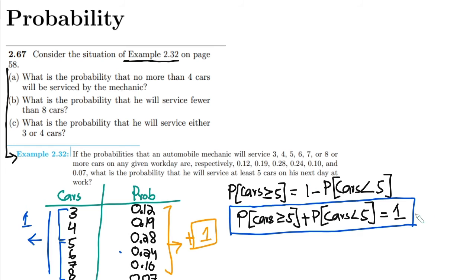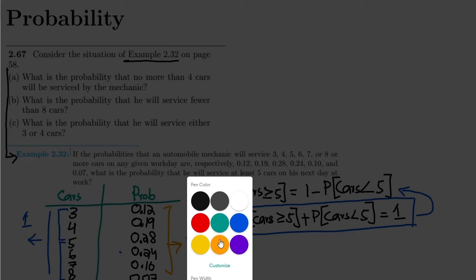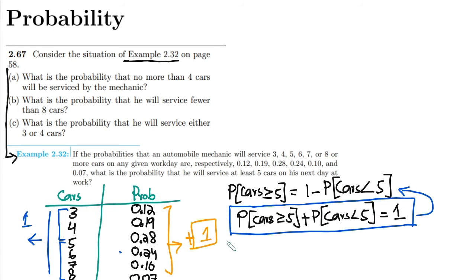Similarly from it I can also have a formula which is here. Now putting all values here what we can see that probability of the cars greater or equal to 5 is 1 minus probability of cars less than 5.